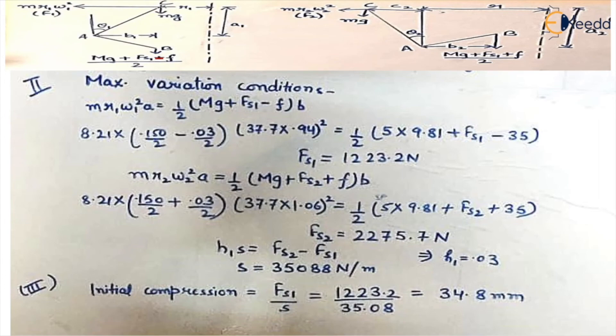Now the third part is we have to calculate the initial compression. The formula is Fs1 upon S because before starting the system, the spring is already preloaded. So Fs1 we already know, S we have calculated. You put the values and you get the answer. Thank you.